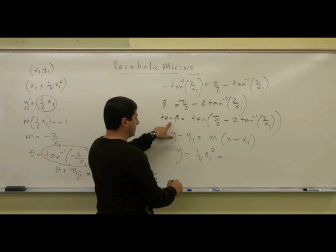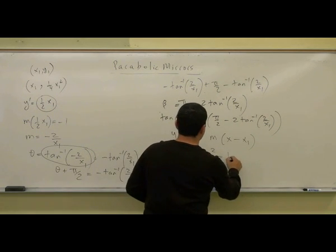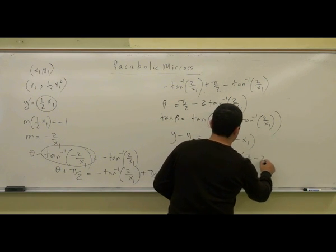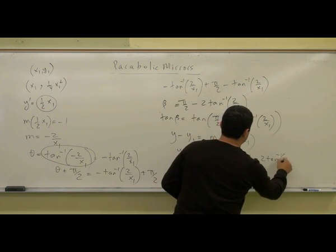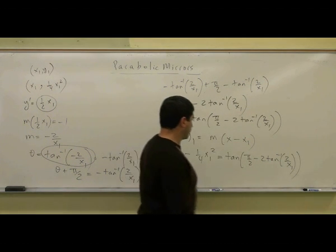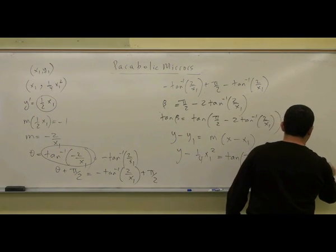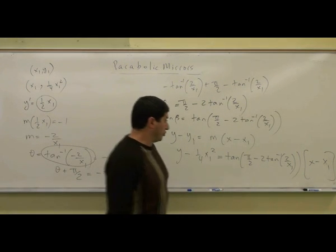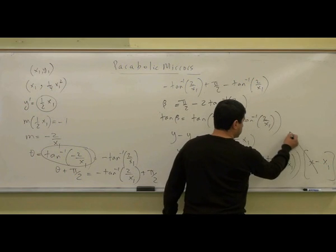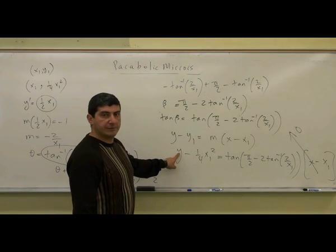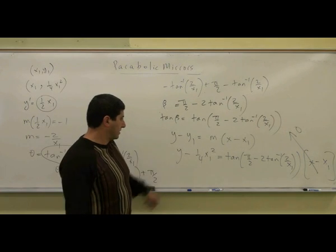The slope is the tangent of the beta, which is this thing: tangent of π over 2 minus 2 tan inverse of 2 over x1, times x minus x1. So we're going to have x minus x1. Then what we're eventually going to do is set x equal to 0. When x equals 0, what should y be? 1.